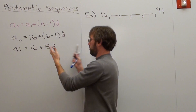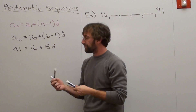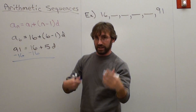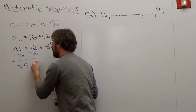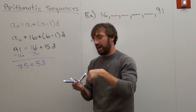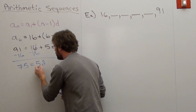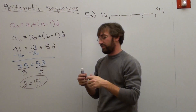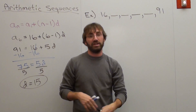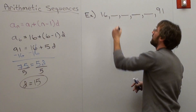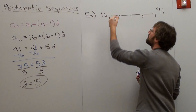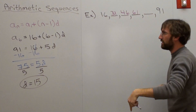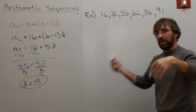I have to solve for d. Once you get to this step, it's really easy. 91 minus 16 is 75, so 75 equals 5d. To solve for d, divide both sides by 5, and d equals 15. My common difference is 15. So to get from one term to the next, I keep adding 15: 16, 31, 46, 61, 76, 91. I just figured out my arithmetic means.